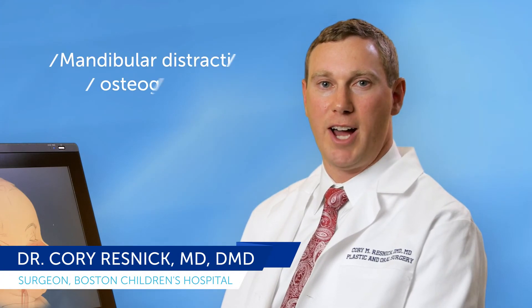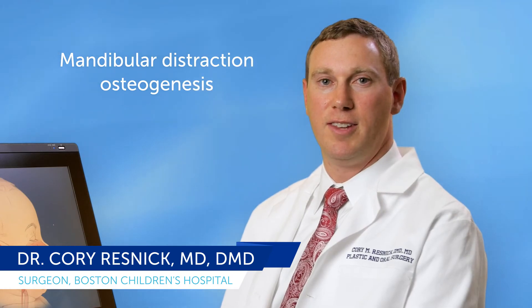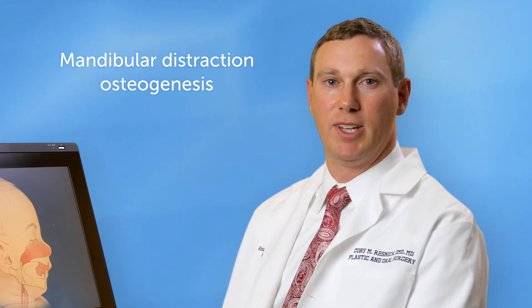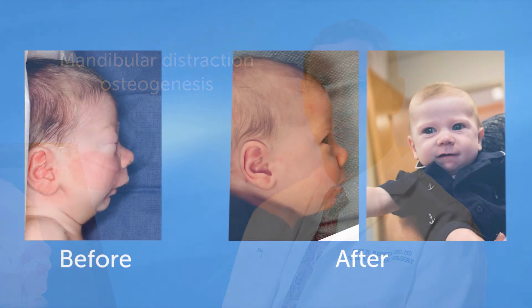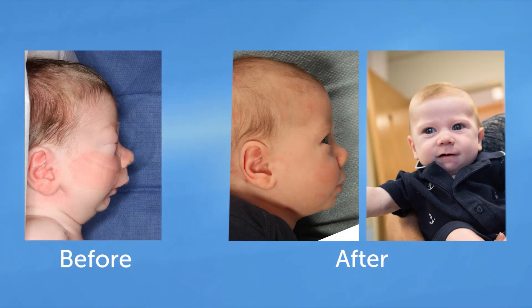An alternative operation for babies with airway trouble and Robins Sequence is called mandibular distraction osteogenesis. This is the operation that I perform most commonly in babies with Robins Sequence. This operation utilizes the body's own mechanism of healing to grow new bone and soft tissue to bring the lower jaw forward and thereby bring the tongue away from the airway.